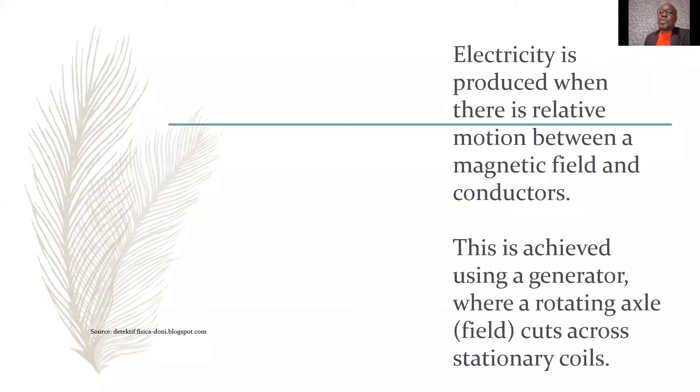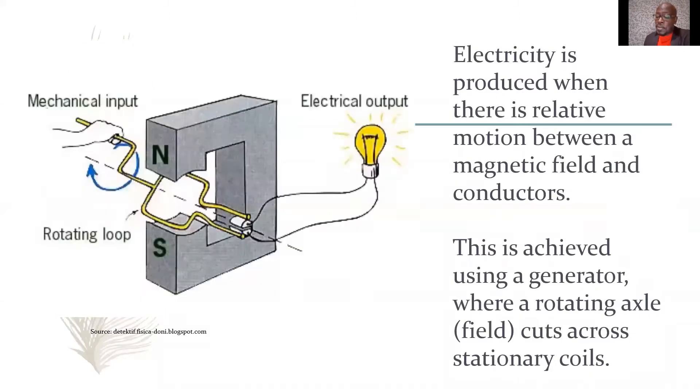Electricity generation is produced when there is relative motion between a magnetic field and conductors. This is achieved using a generator where a rotating axle, which we call the field, cuts across stationary coils.